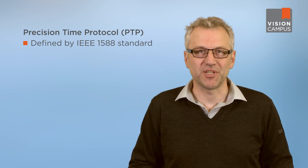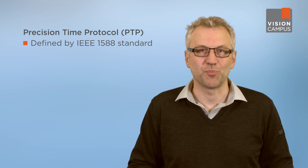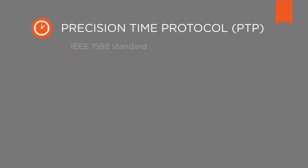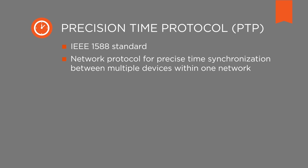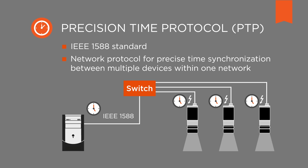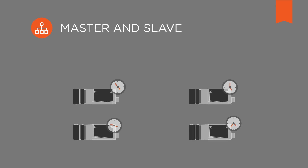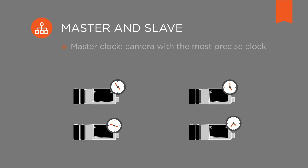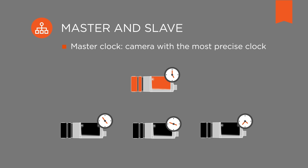One important component of the GigE Vision 2.0 standard is the IEEE 1588 Precision Time Protocol, or PTP. PTP is a network protocol to achieve precise time synchronization between multiple cameras within one network. For PTP to work within a network it needs PTP-ready devices. PTP works with two types of clocks: one is the master clock, and the others operate as slaves.